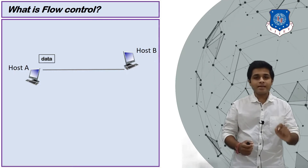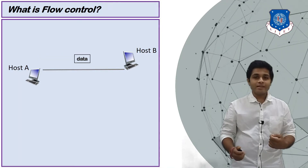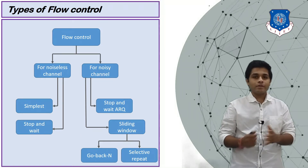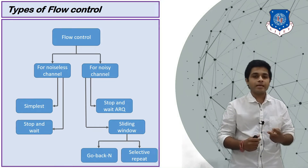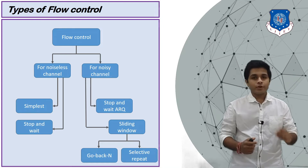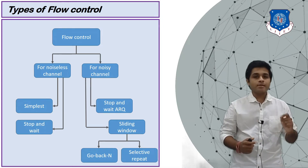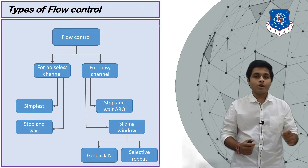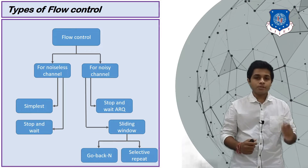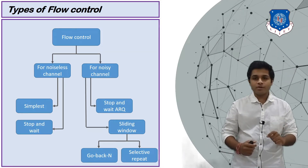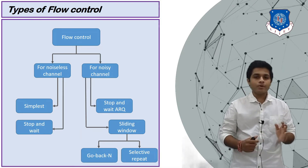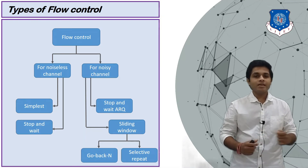Now let's see the types of flow control. Flow control is divided into two main types: for noiseless channels and for noisy channels. For noiseless channels there are two types: the simplest protocol and stop-and-wait protocol. For noisy channels there are two types: stop-and-wait ARQ and sliding window. Sliding window is further divided into two categories: Go-Back-N and Selective Repeat.